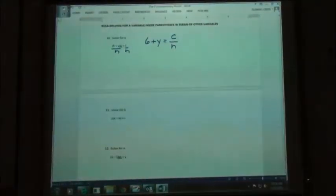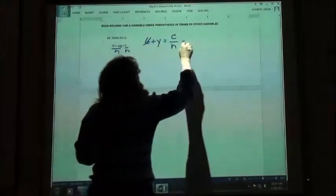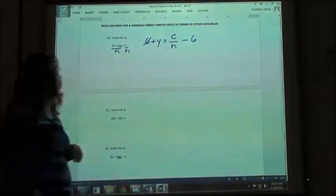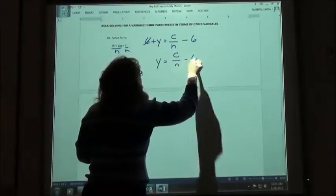Then if I want to solve it for y, I'm going to move my 6 to the other side. So to move my 6 to the other side, I'm just going to subtract the 6. And my answer would look like that. Y equals c over n minus 6.